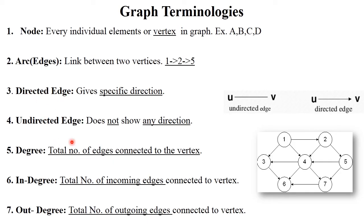Next is directed edge and undirected edge. In a directed edge, a specific direction is denoted — for example, 1 to 2 means the path moves from vertex 1 to vertex 2. An undirected edge does not show any direction. Next is degree — the total number of edges connected to a vertex. Degree has two types: indegree, which is the total number of incoming edges to a vertex, and outdegree, which is the total number of outgoing edges. For vertex 4, incoming edges are 1→4, 2→4, and 5→4, so indegree is 3. Outgoing edges are 4→3, 4→6, and 4→7, so outdegree is also 3.